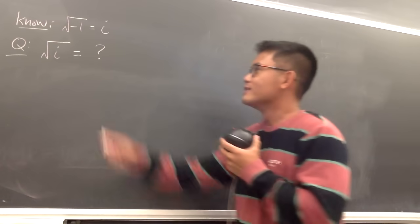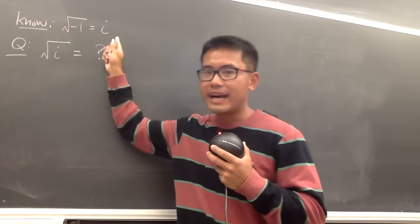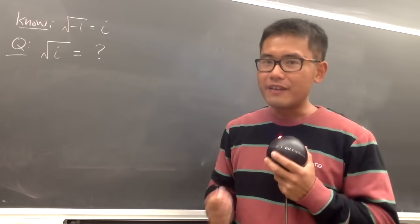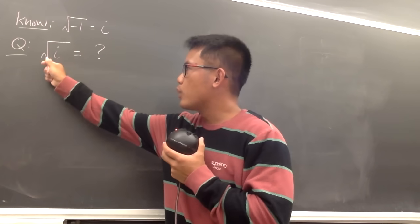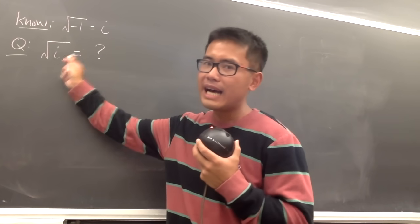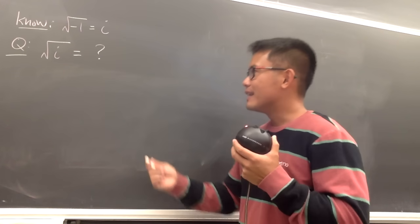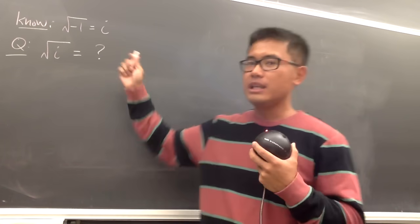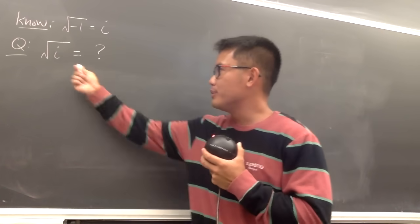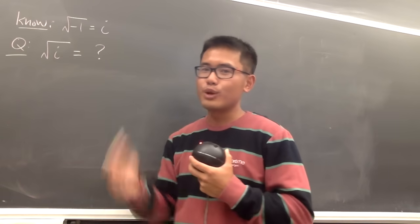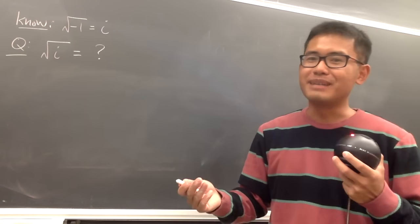As we all know, the square root of negative 1 is equal to i, but have we ever thought about what the square root of i is? When you put the i inside the square root, do we still end up with a complex number?